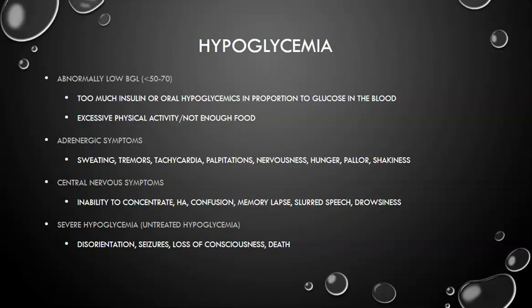Central nervous system symptoms of hypoglycemia include inability to concentrate, altered mental status, slurred speech, drowsiness, fatigue, short-term memory lapses, and general confusion. Headache is also a common sign. Severe hypoglycemia — when blood sugar was perhaps 65 to 70 and not treated quickly enough — can range from disorientation to seizure and loss of consciousness. In the most severe cases, death can result if there isn't enough glucose in the blood for the body to function.